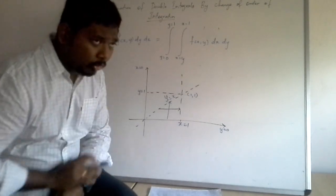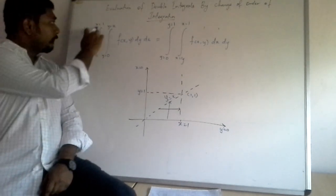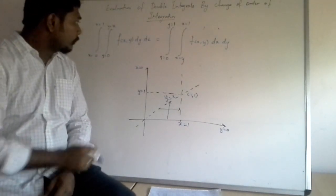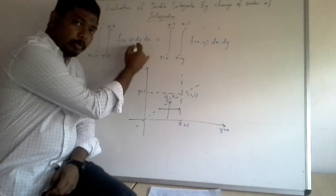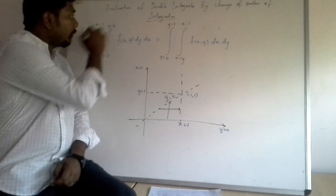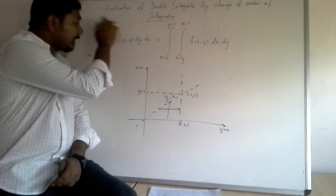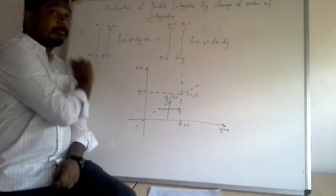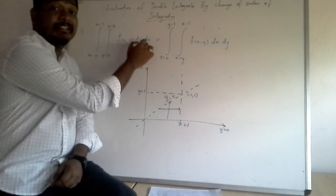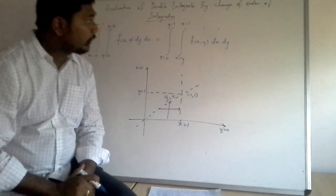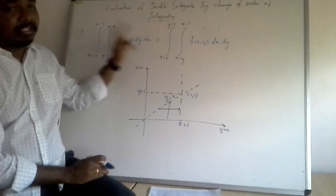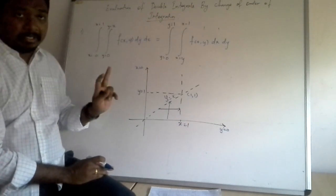Now understand this clearly. There is a question: integral of 0 to 1, 0 to x, f(x, y) dy dx. That means first we have to integrate with respect to y and then with respect to x. Note that the limits 0 to x mean y will always be in terms of x. The whole point is to change this order — we have to change dy dx to dx dy.